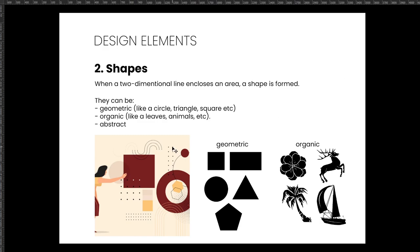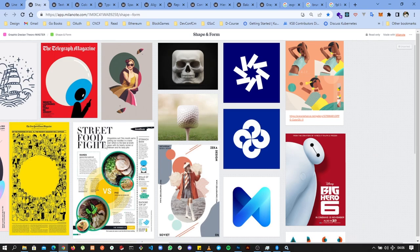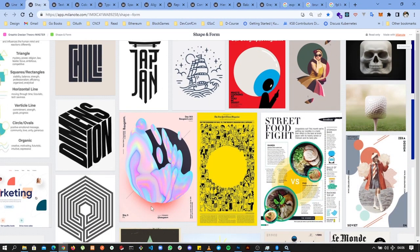The next design element is shape, also called form. When two-dimensional lines enclose an area, a shape is formed. Shapes can be geometric or organic. Geometric shapes are precise, while organic shapes are objects we can recognize in the physical world. You can see how shapes are used intentionally by graphic designers throughout their designs.